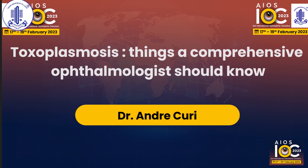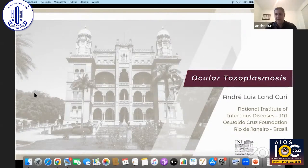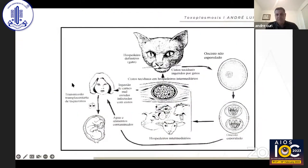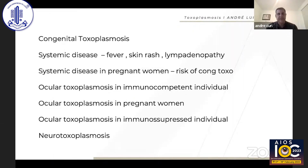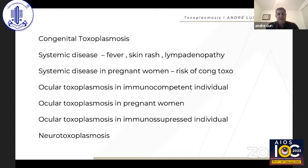Thank you very much for the kind invitation. I will try to cover toxoplasmosis — it's a quite difficult issue. It's important to remember the life cycle of the parasite, but more important is to consider that toxoplasmosis can present as different diseases: congenital toxoplasmosis, systemic disease with fever, skin rash, and lymphadenopathy, systemic disease in pregnant women, ocular toxoplasmosis in immunocompetent individuals, ocular toxoplasmosis in pregnant women, toxoplasmosis in immunosuppressed individuals, and neurotoxoplasmosis.